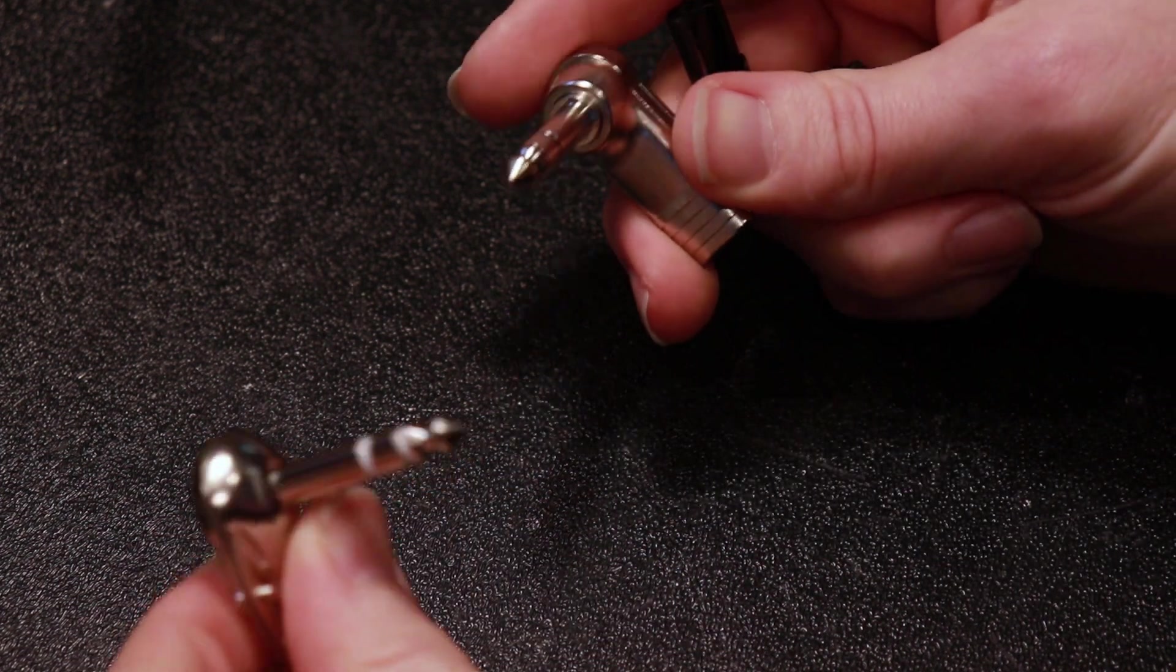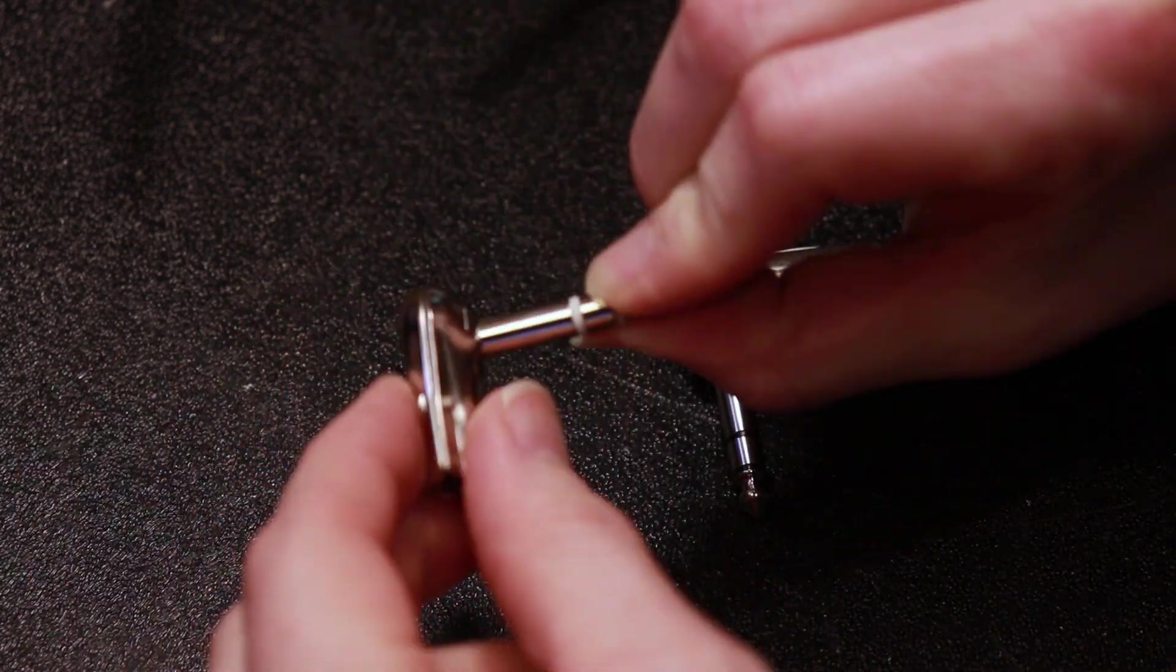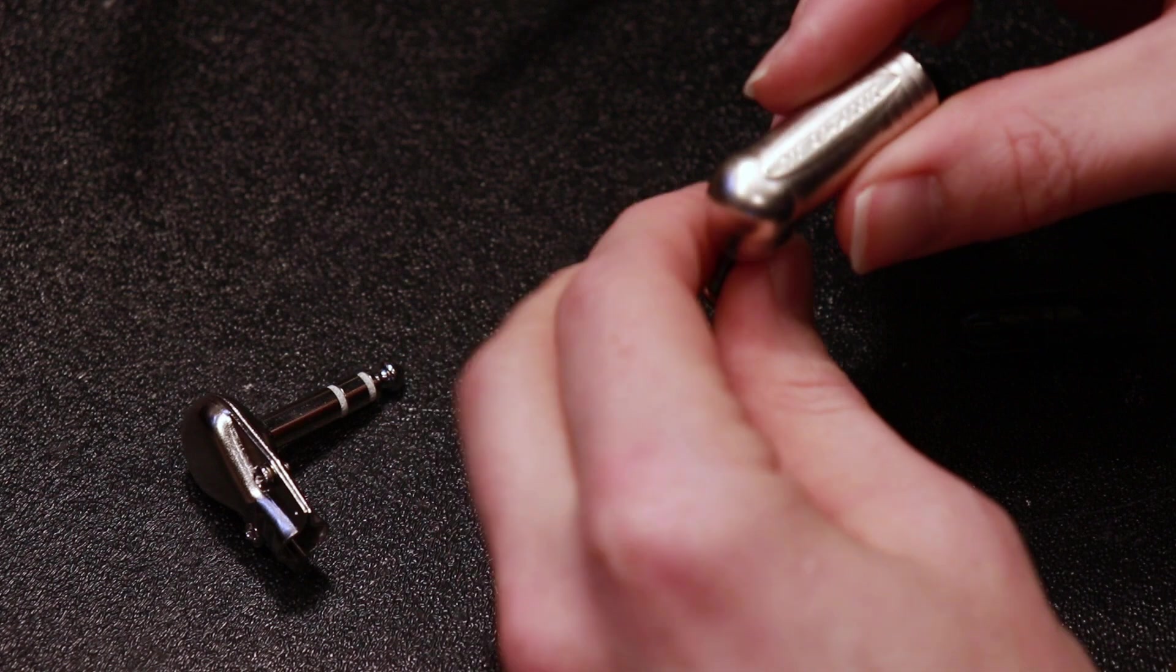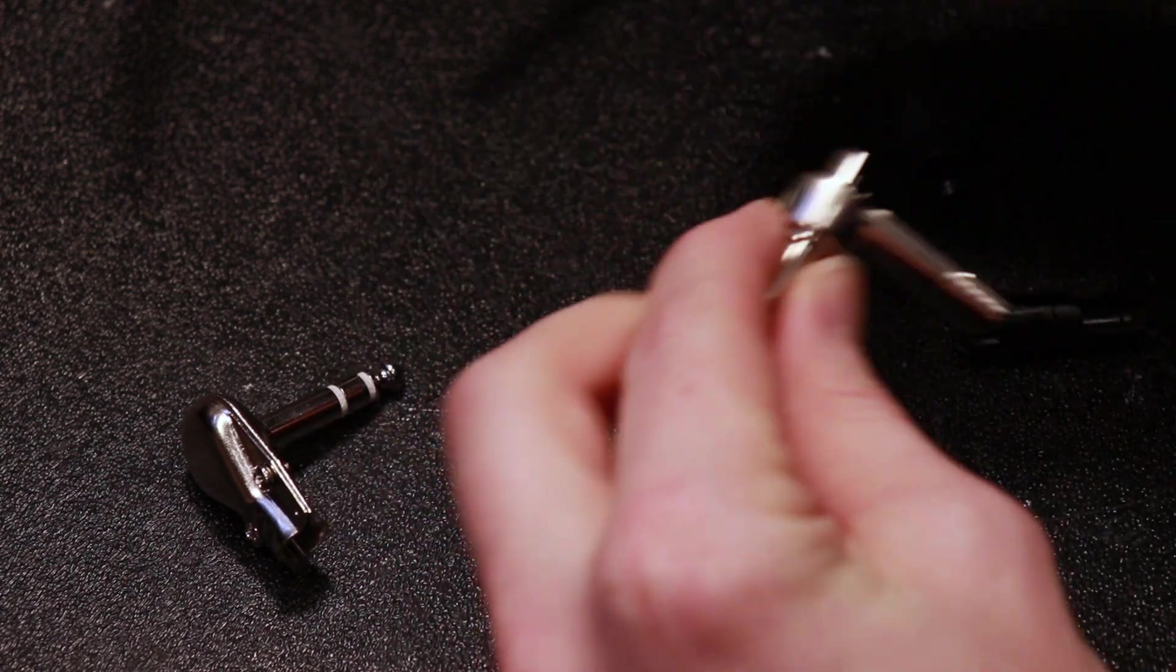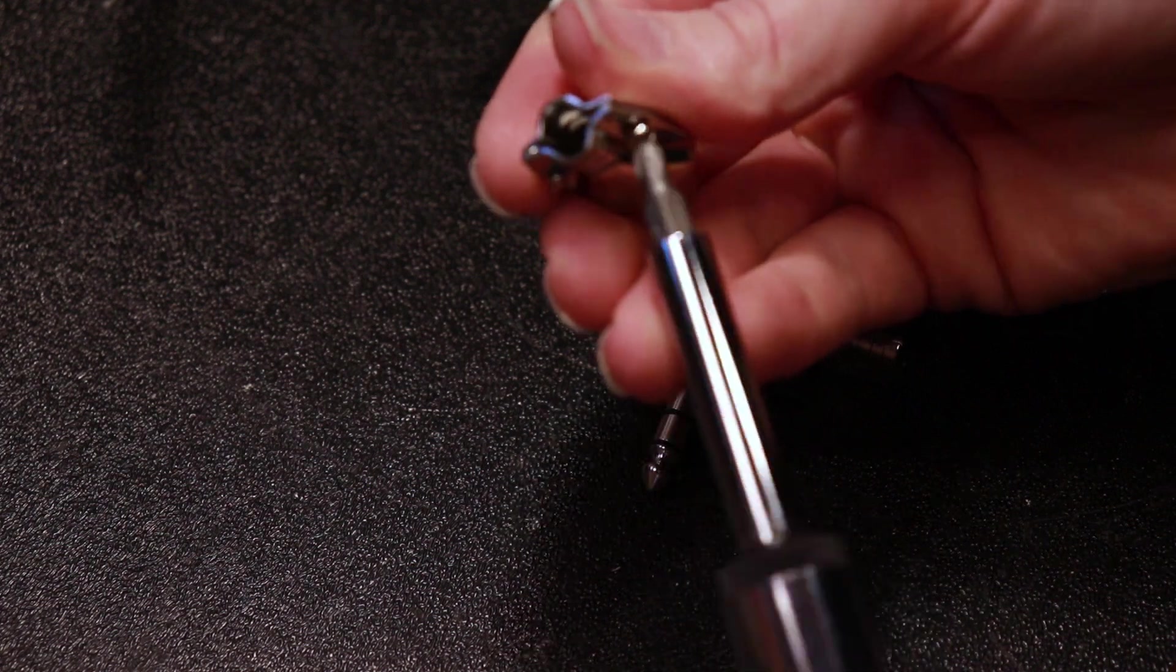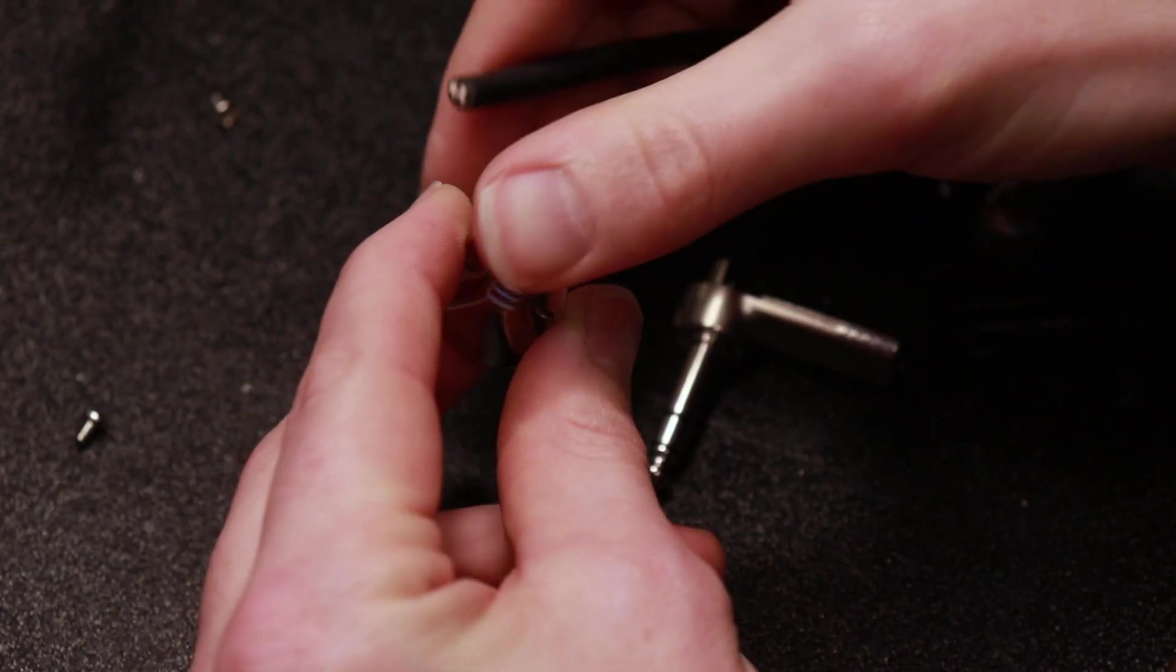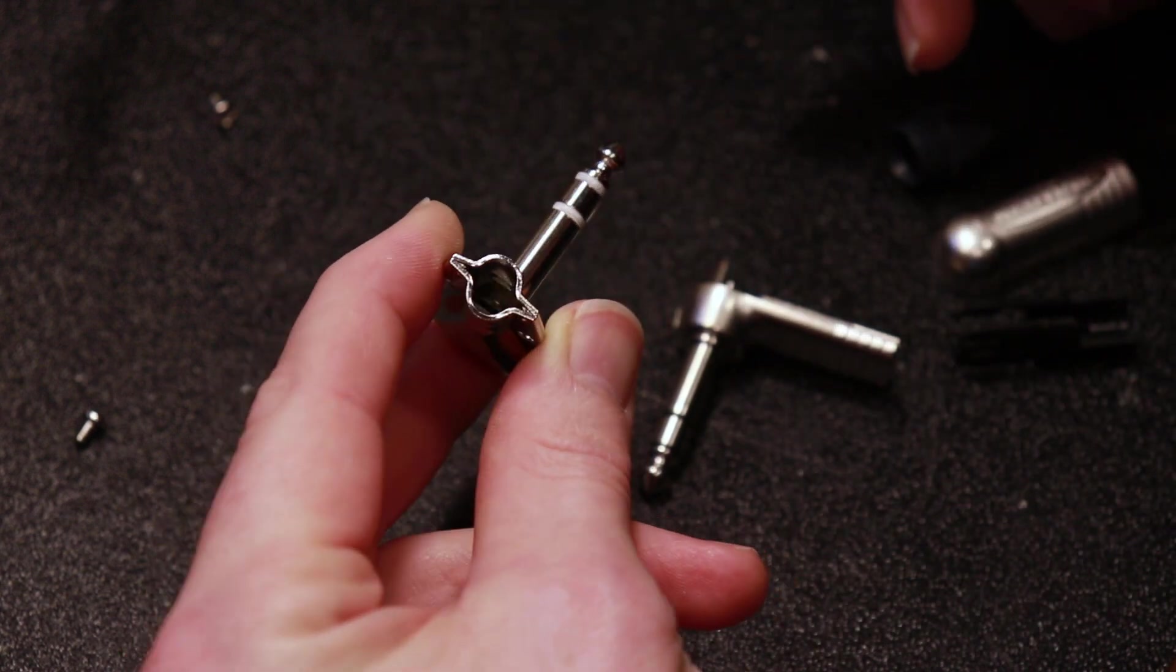So now at the other end of the cable, I need a right angle quarter inch and I have here actually two styles of jack. Now this is just a cheaper right angle pancake jack and I have a nicer right angle Neutrik jack. Now this is definitely one of those things that you get what you pay for.